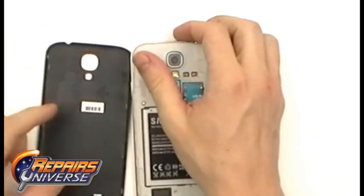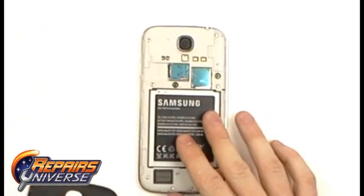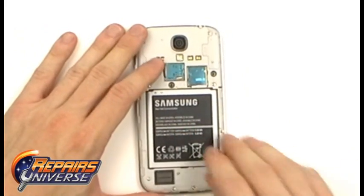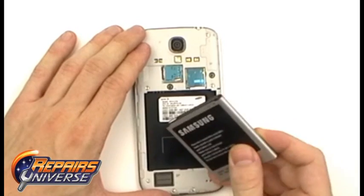From there we can use your nail or safe open pry tool to remove the back cover. Once the back cover is removed, we can remove the battery, SIM card, and memory card.